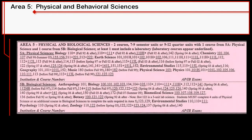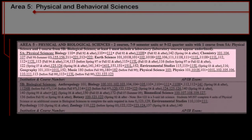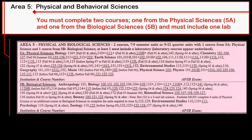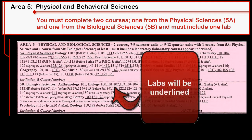Area 5 are the Sciences. They are divided into two groups, Physical and Biological. You must choose one course from each group, and at least one of those science courses must have a lab associated with it. On our form, the labs are underlined.